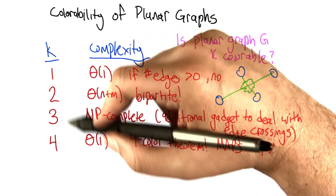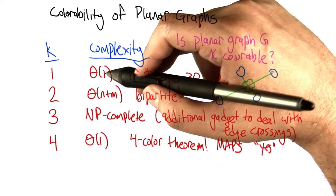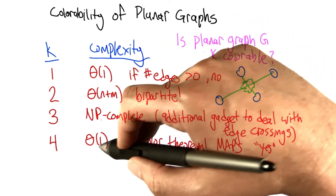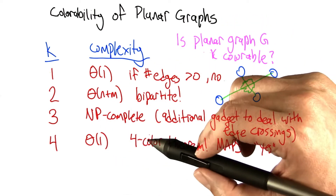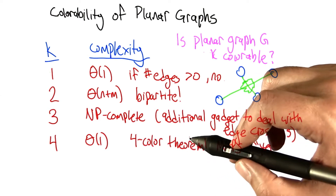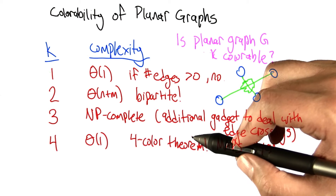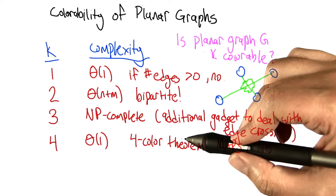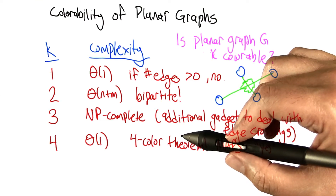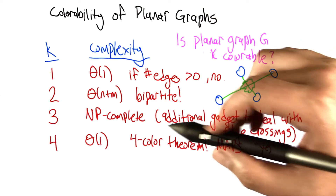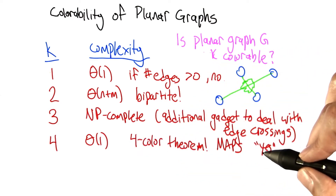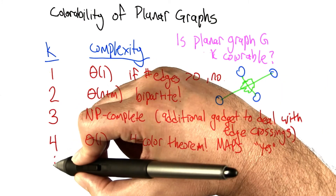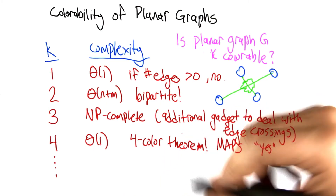What about coloring a planar graph with 4 colors? Remarkably, the problem has gone harder and harder — from constant to linear to basically exponential — and now it goes back to constant time. That's because of the celebrated 4-color map theorem, which says any map can be colored with 4 colors. Any map can be translated into a planar graph, so every planar graph can be colored with 4 colors. The constant-time algorithm is just to always say yes — if you give me a planar graph, it's 4-colorable. And therefore it's also 5, 6, 7 colorable, because you can just use the first 4.